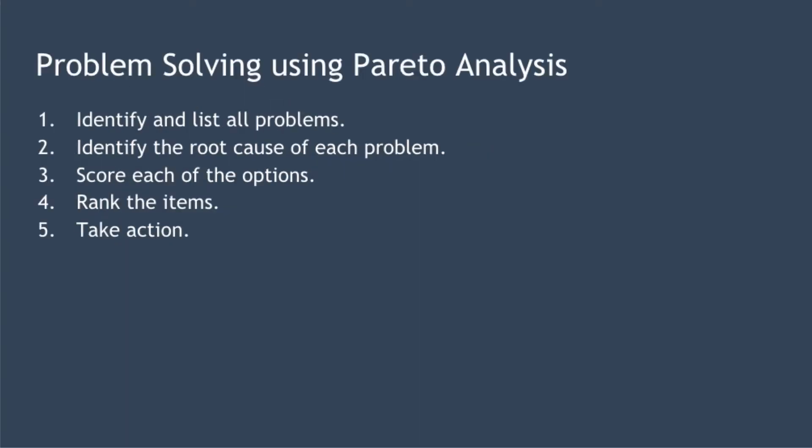If you want to conduct your own Pareto analysis to solve a problem where you have multiple options but not enough resources to pursue all of them, you can follow this five-step process. Step one: identify and list out all of the problems you have. Step two: identify the root cause of each problem by finding the commonality between them. Step three: score each option using some relative measure. Step four: rank the items by tallying up all of your scores. Step five: take action by addressing the root causes causing the biggest problems first.